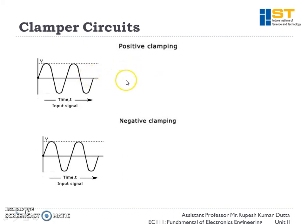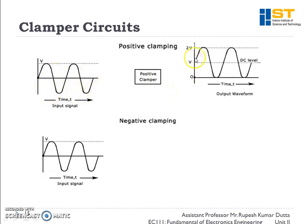Now, clamper circuits are those circuits which change the DC level of the input voltage without changing its shape. For a positive clamper, if this is the input signal, then we will get an output signal that is clamped up by some voltage V. The DC level of the input signal is zero whereas the DC level of the output signal is V, so we have the highest magnitude as 2V and the lowest magnitude as 0.